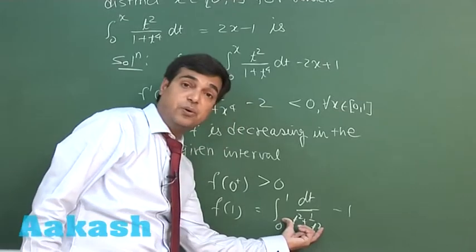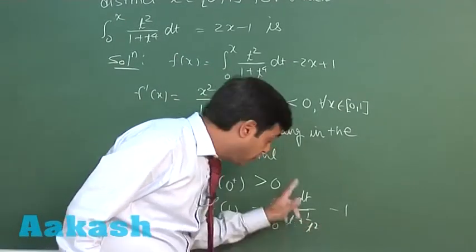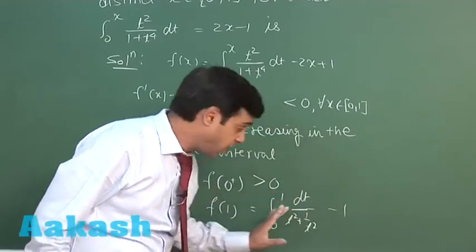The term 1 upon t square plus 1 by t square is less than half.